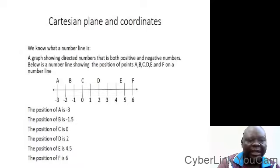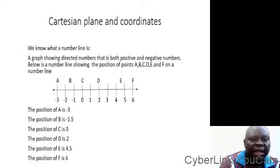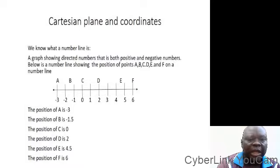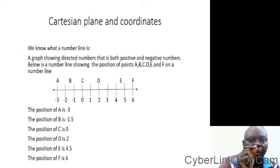The position of D, for instance, is 2 — positive number 2. And the position of A is between 4 and 5, that is approximately 4.5. In the same way, look at position B — it is between minus 2 and minus 1. Then the position of point B is minus 1.5.